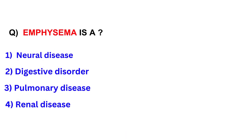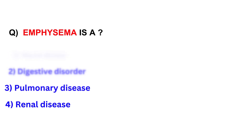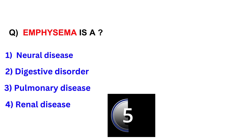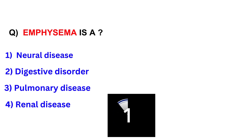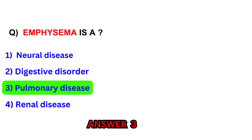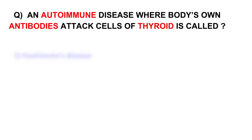Emphysema is a? Neural disease, digestive disorder, pulmonary disease, or renal disease. Answer: Pulmonary disease.